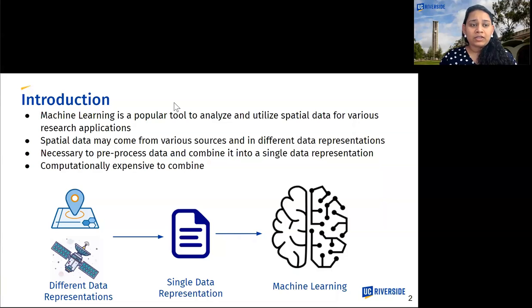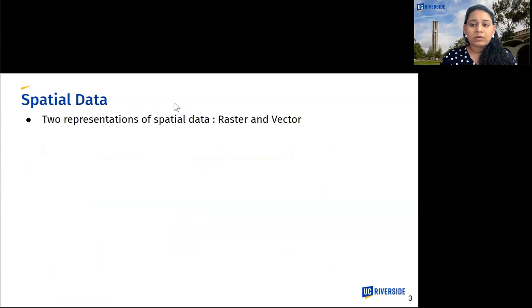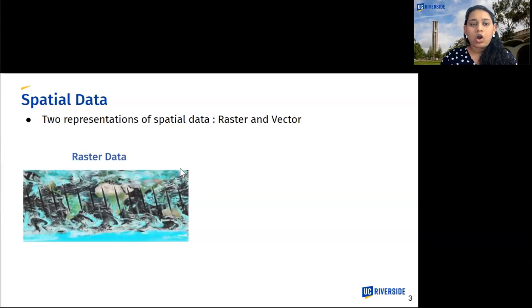Today, various research applications use machine learning to analyze and utilize spatial data. This data often comes from various sources and different data representations. This makes it necessary to pre-process this data in order to combine it into a single representation that can then be used by the algorithm. However, it's a computationally expensive process to combine different representations into a single representation, because spatial data can be represented as either raster data or vector data.